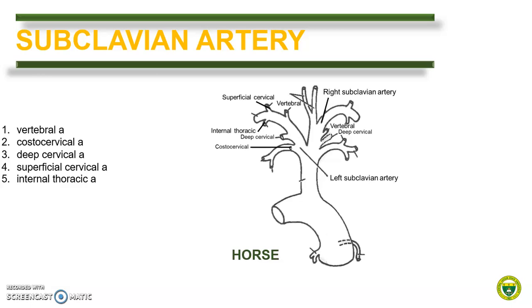The branching is much more complicated in the horse because the branches of the left and right subclavian arteries are different. The right subclavian artery has the same four branches as presented in the dog. On the left, however, the deep cervical artery arises directly from the subclavian artery and not from the costocervical trunk. Thus, the left subclavian artery has all five branches: the vertebral, the superficial cervical, the internal thoracic, the costocervical, and the deep cervical artery — all five directly branching from the left subclavian artery.